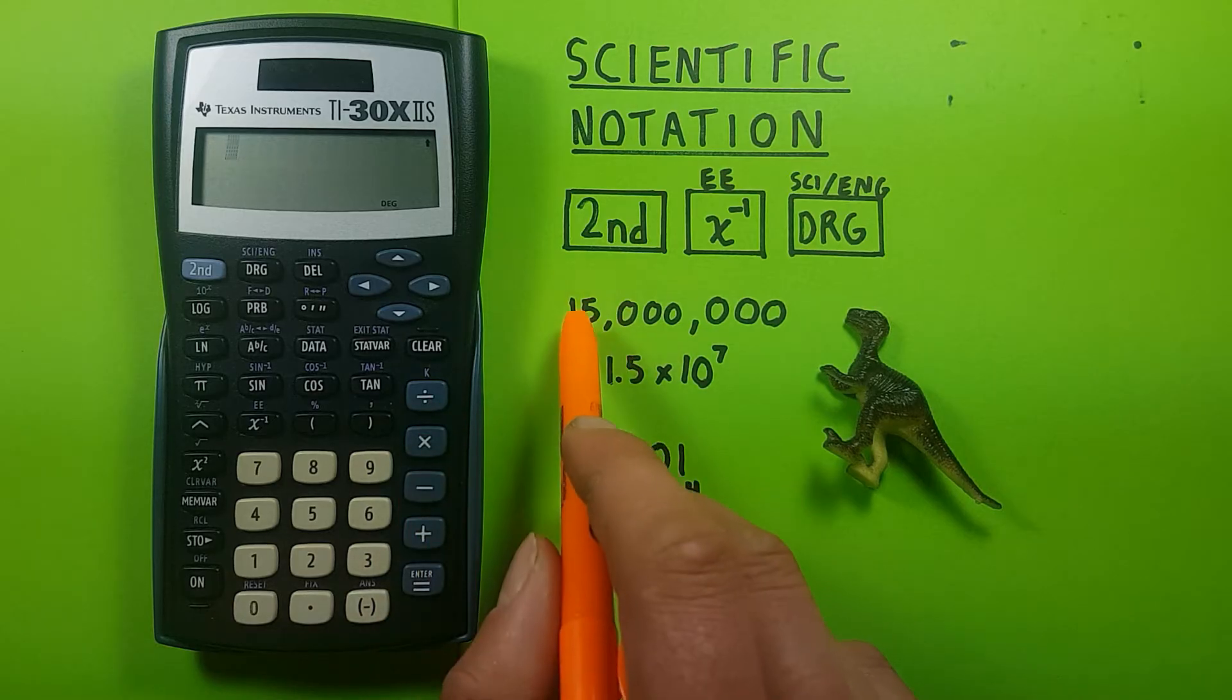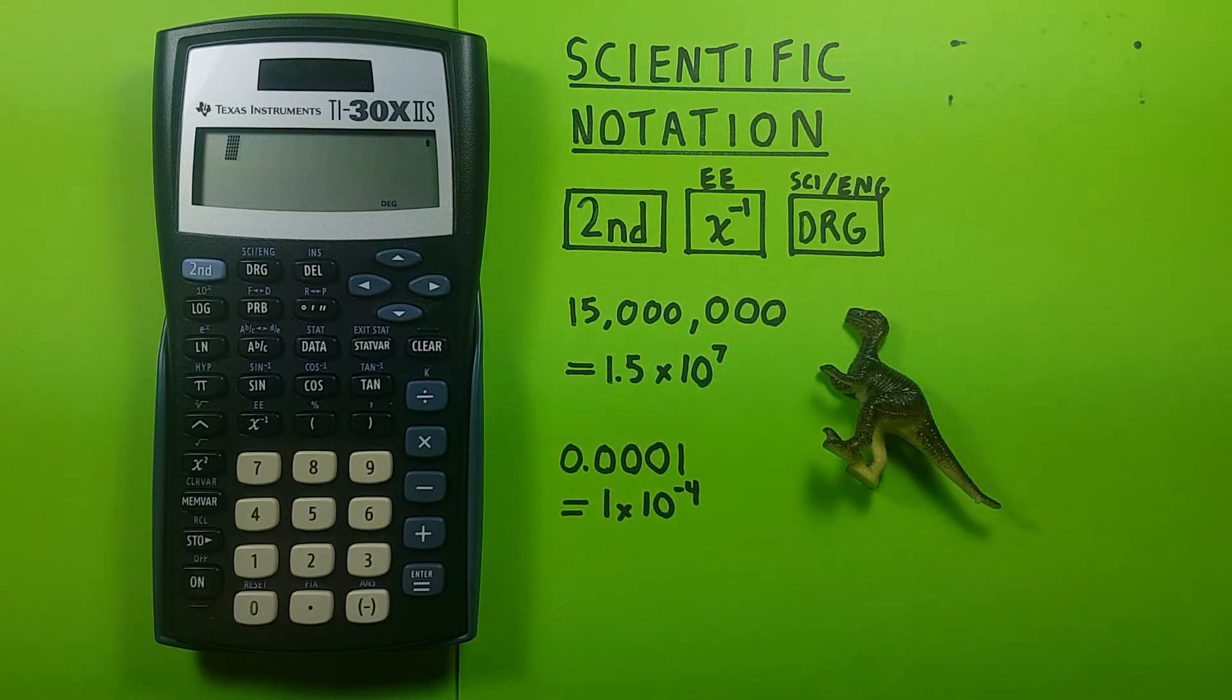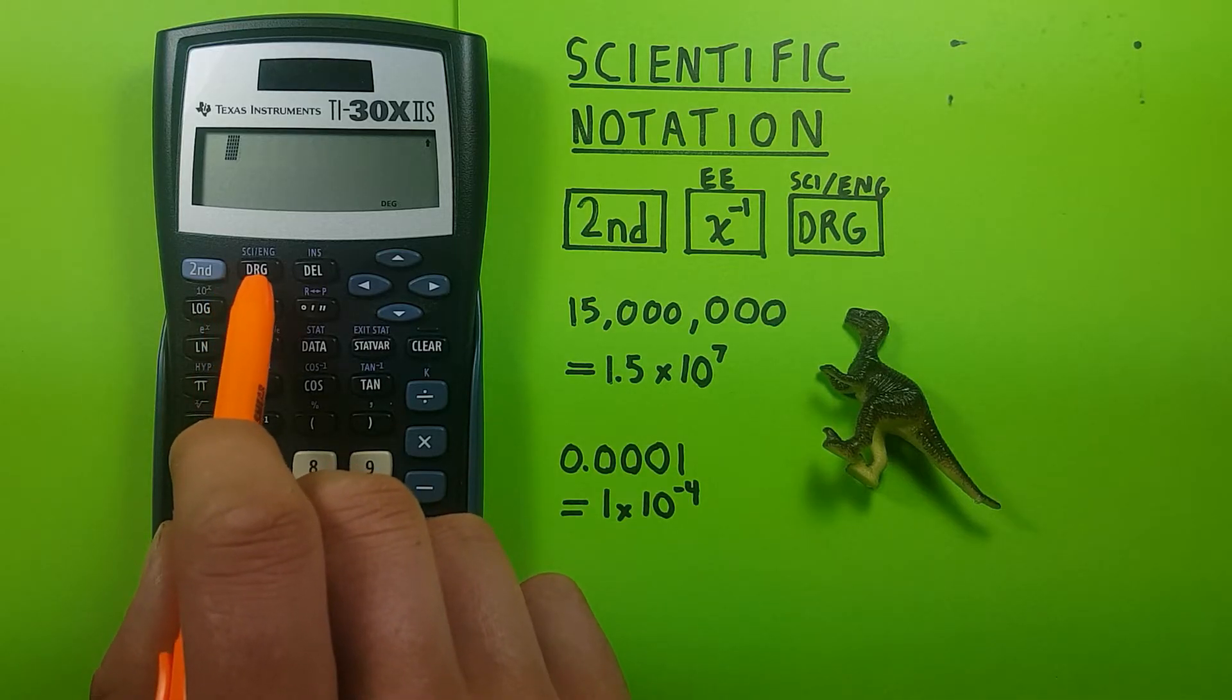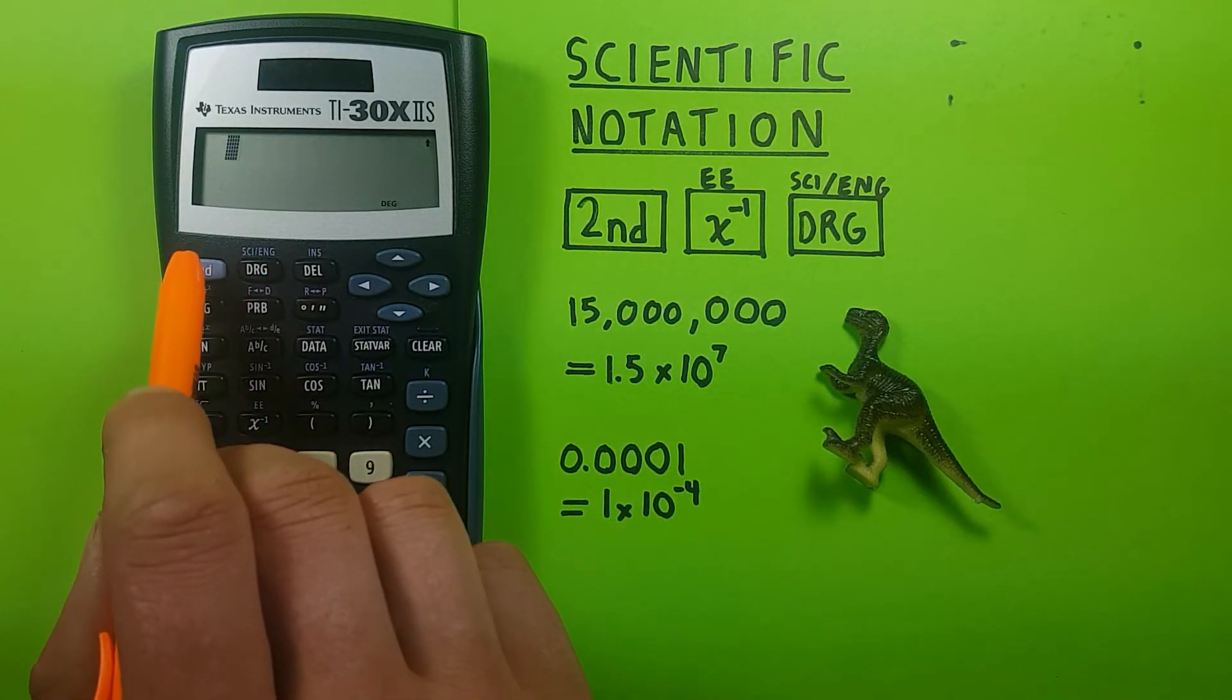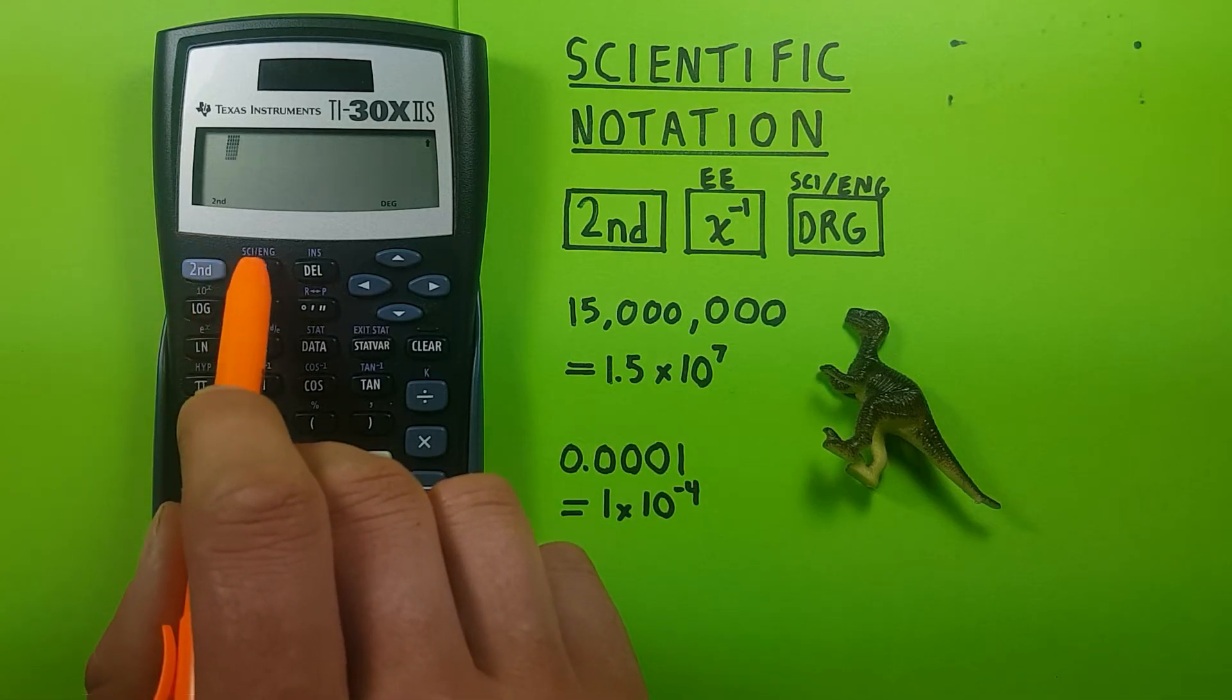But let's say we have the number and want to get the scientific notation. Well, we can use the scientific notation mode in our calculator here. To change modes, we go second function, degree key.